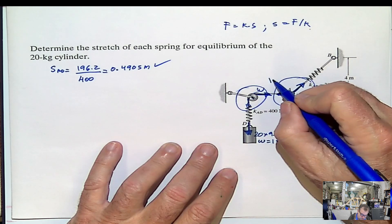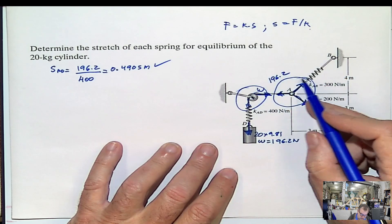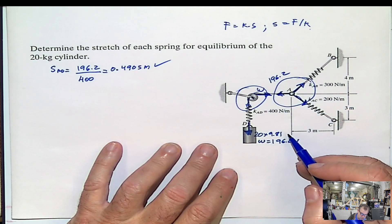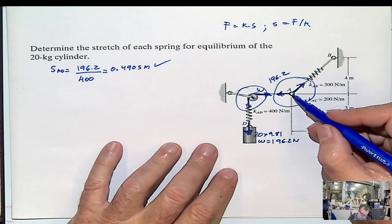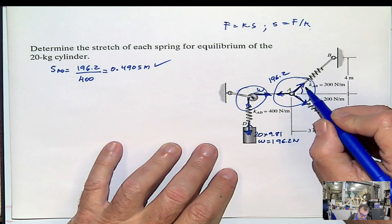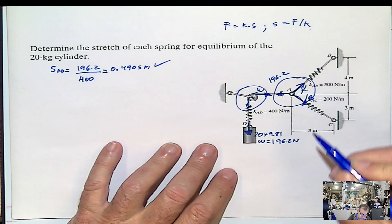This one we know is 196.2. And this is the one that we have to calculate. So we have AB and AC. And then we can calculate alpha, and we can calculate beta.